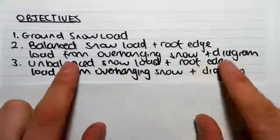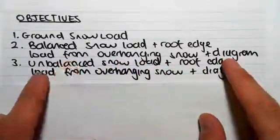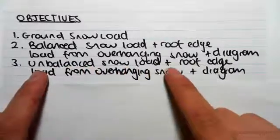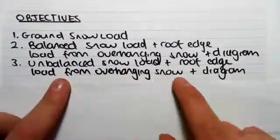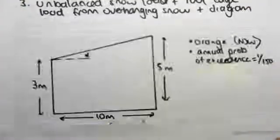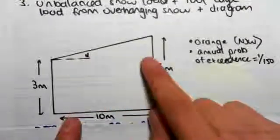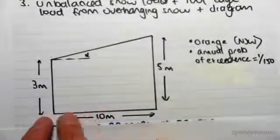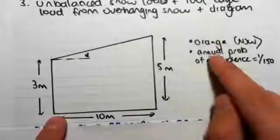We're then going to draw the diagram. We're then going to be looking for the unbalanced snow load, the roof edge load from overhanging snow, and also drawing the diagram. This time our structure is mono-pitched, so it looks like this: three and five meters, it's ten meters wide.